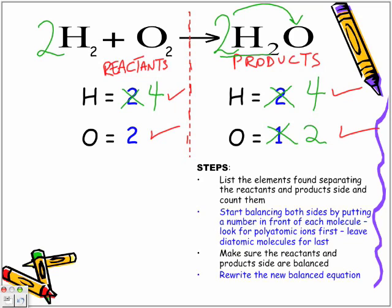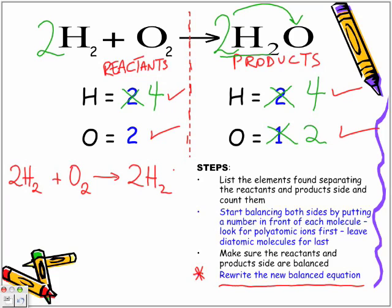The final step is to rewrite the new balanced equation. The new balanced equation is 2H2 plus O2 produces two molecules of water. In reality, to make water it's not enough to combine just one hydrogen and one oxygen. We are technically putting together two molecules of hydrogen combined with one molecule of oxygen, and in turn we create two molecules of water. This is what we now have — a balanced equation.